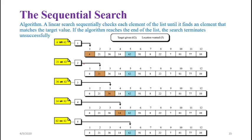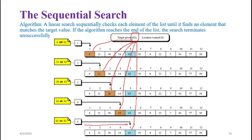The sequential search algorithm searches for a specific number in a list or array. For example, to find 62 in a list: compare 62 with the first number - not equal; compare with the second - not equal; continue until you find it. Once found, return the index number of that location. If the element is not in the list, it searches all the way to the last element and reports 'element not found.' This is a simple algorithm that searches sequentially one by one from the beginning.